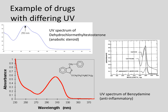Here's another example of drugs with differing UV spectra. An anti-inflammatory drug has its maximum absorption almost at 310, whereas the opiates and caffeine had their maximum right around 280. An anabolic steroid has a maximum of 250. So if our sample ran at around 280, we could say for sure it's not this anabolic steroid, it's not this anti-inflammatory — it's possibly one of these three drugs.